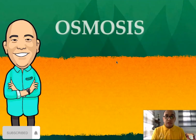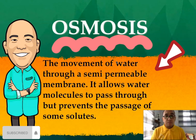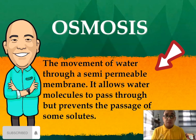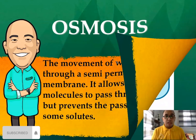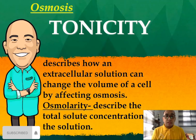Next is osmosis — the movement of water through a semipermeable membrane. It allows water molecules to pass through but prevents the passage of some solutes, as shown in this illustration of the semipermeable membrane.